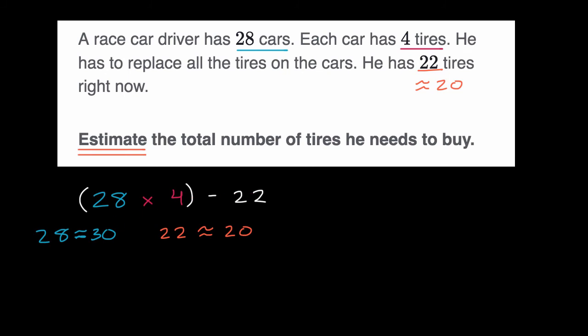And so that simplifies the calculation a lot. We could say that this thing up here is roughly equal to, he roughly has 30 cars, and each of those cars need four tires. And then he's going to figure out the total number of tires he needs to replace, but then he subtracts out the number that he already has. So instead of subtracting out 22, we're going to subtract out roughly how many he already has, roughly 20.